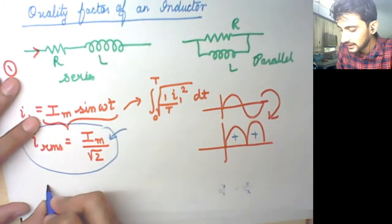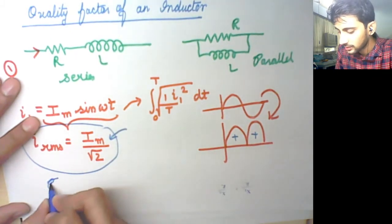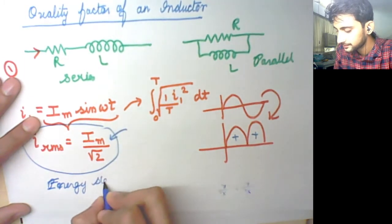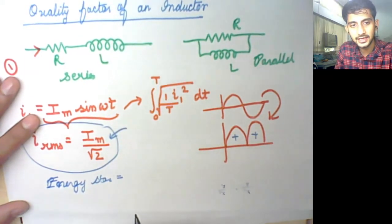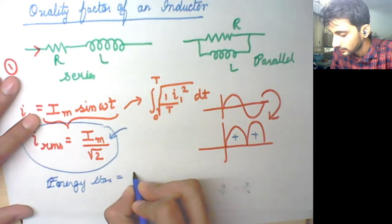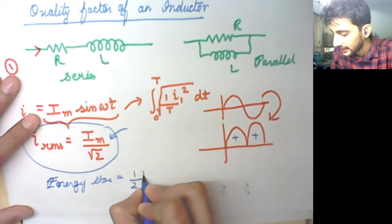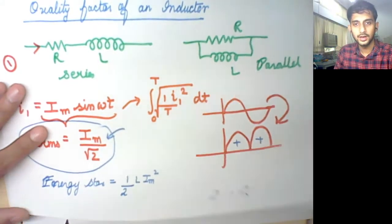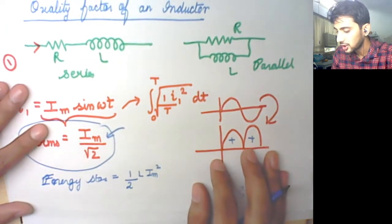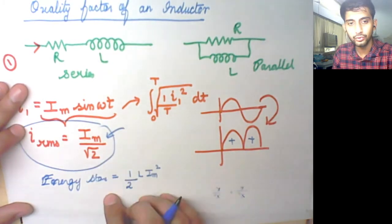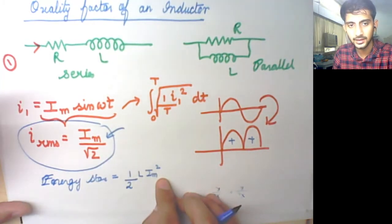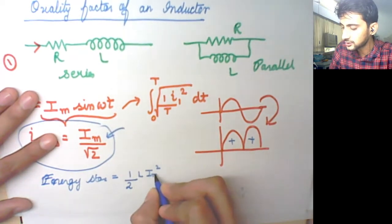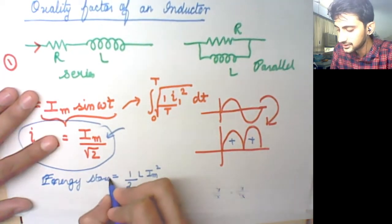The energy stored in the inductor in one cycle of a signal I = Im sin(ωt) is given by ½ L Im². So when we represent it in terms of the maximum current, we get ½ L Im². This Im² upon 2 term arises from the RMS conversion. This is the numerator of our quality factor expression.